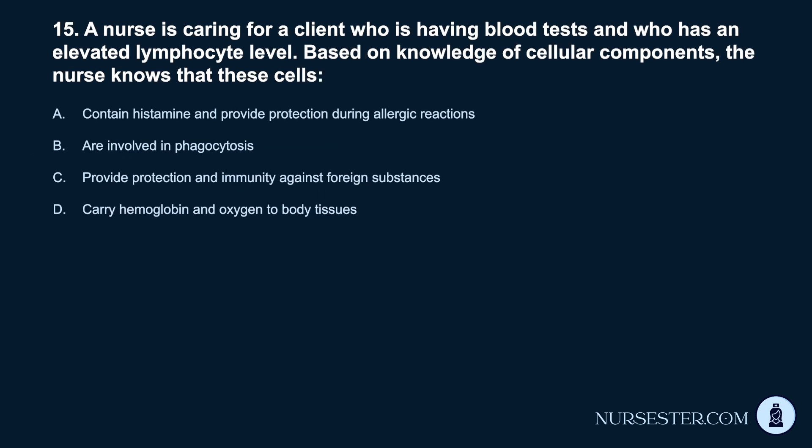Question 15. A nurse is caring for a client who is having blood tests and who has an elevated lymphocyte level. Based on knowledge of cellular components, the nurse knows that these cells: A. Contain histamine and provide protection during allergic reactions. B. Are involved in phagocytosis. C. Provide protection and immunity against foreign substances. D. Carry hemoglobin and oxygen to body tissues.